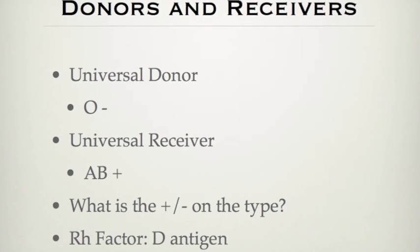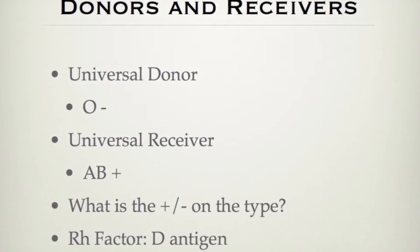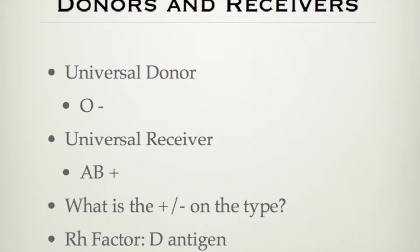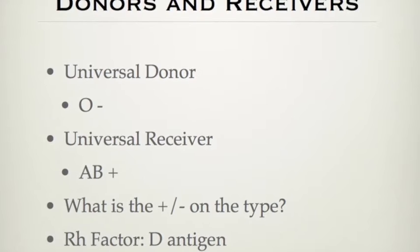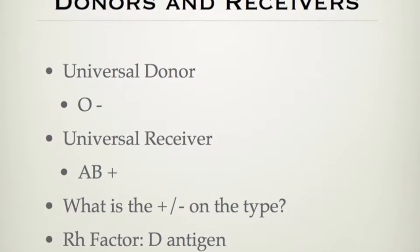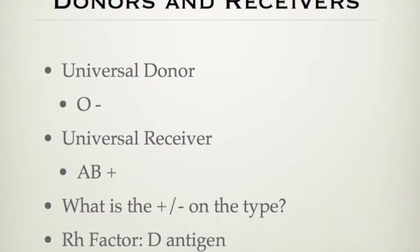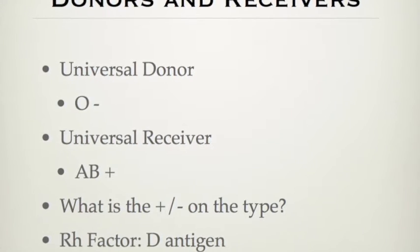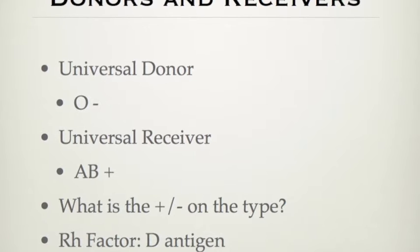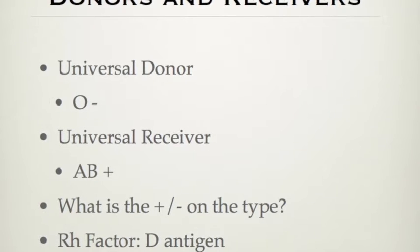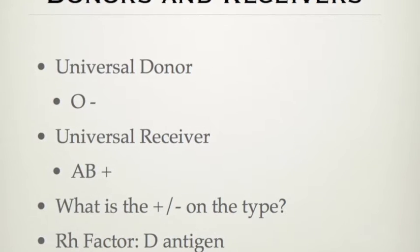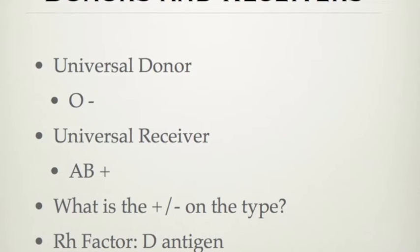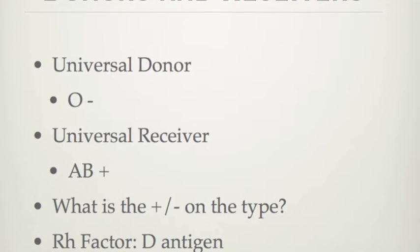Through the study of serology, we've determined that the universal donor is O negative, meaning anyone can receive O negative blood. The universal receiver is AB positive. The positive and negative refer to the D antigen — if you have this antigen, you are positive; if you don't, you are negative.